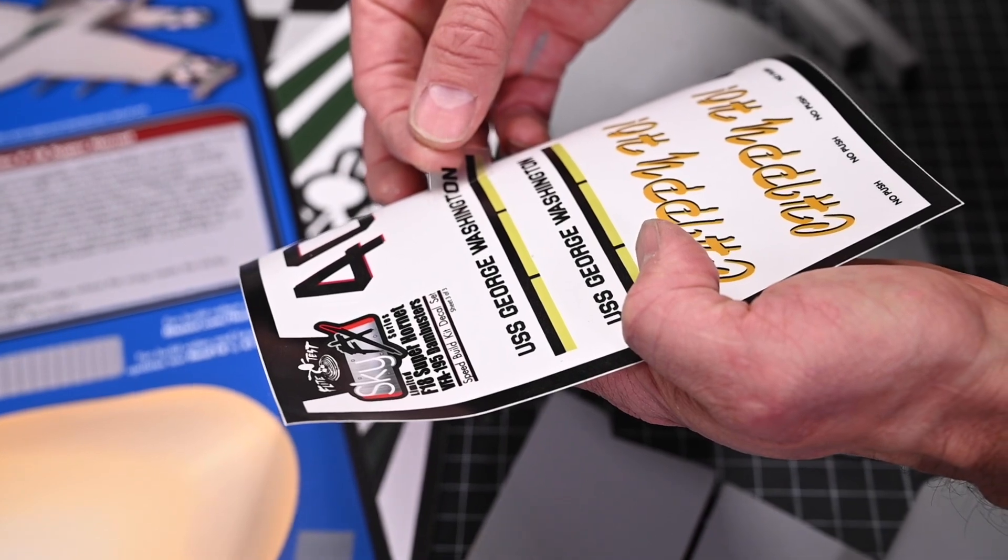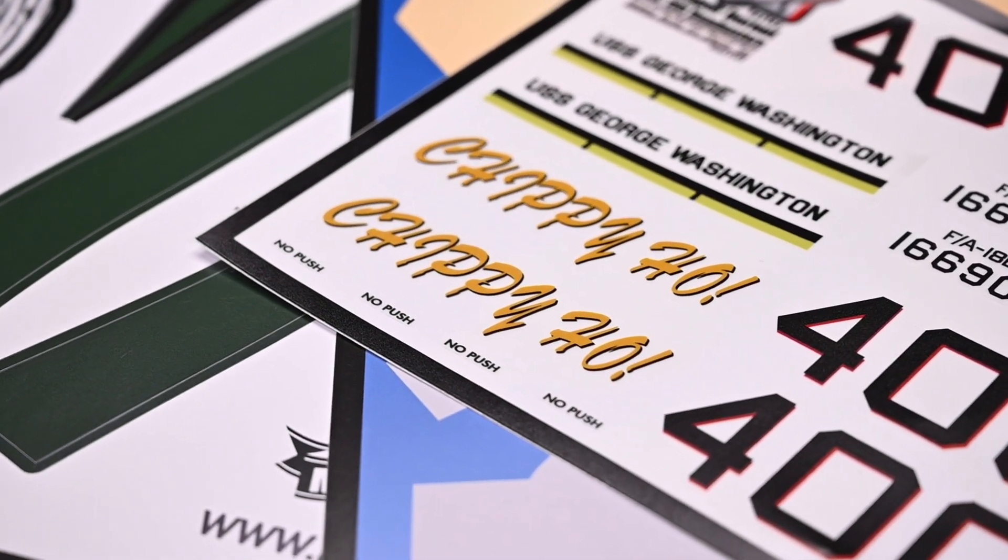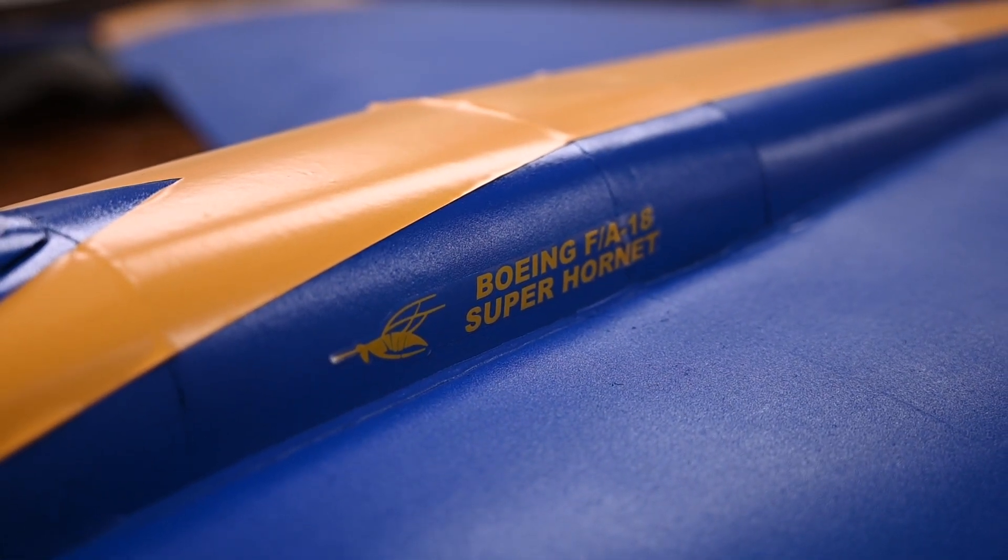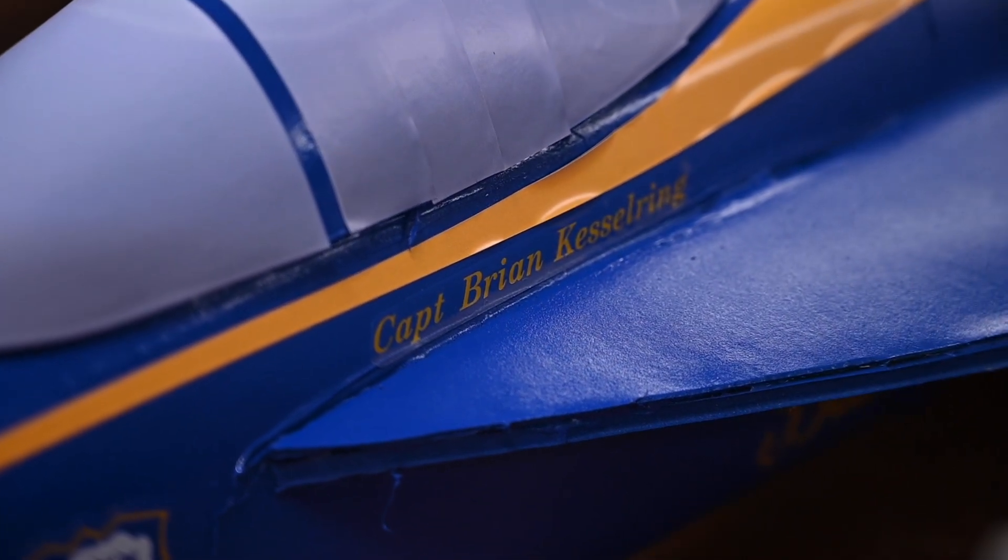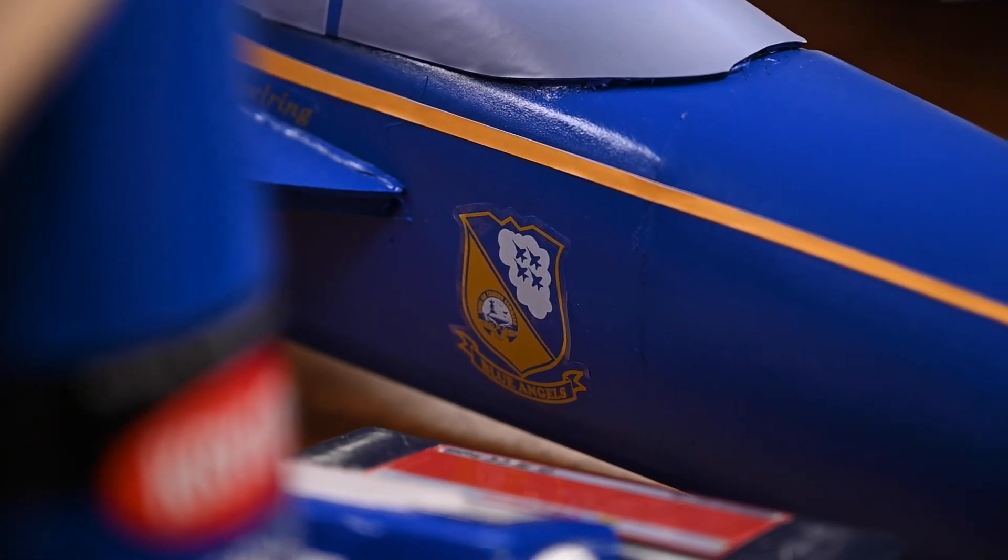The other type of vinyl we use is a clear vinyl. The advantage of clear vinyl is that we're able to print very small detail and still allow the color of the aircraft to come through. It would be very difficult to cut out each of these letters individually. It would be extremely difficult to apply those to our aircraft without getting them crooked.